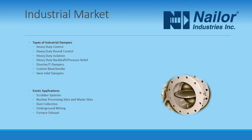Industrial dampers may be categorized generally by the type of function they are designed for. Here are some of the most common types: heavy-duty control dampers for process control; heavy-duty round control dampers, also used for process control, tending to be single blade or butterfly type; isolation dampers for sealing off ductwork for quality or safety; backdraft and pressure relief dampers for pressure control and to ensure one-directional airflow; diverter or T-dampers to split or redirect hot gas flow; blast and smoke dampers for life safety and blast control; and vane inlet dampers to pre-spin air entering a fan to economize fan operations.